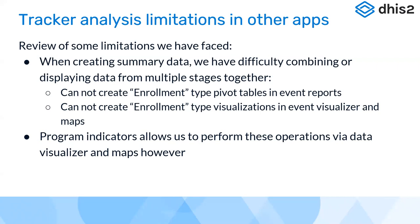Some limitations we faced while using analytic tools such as event report, visualizer, and maps: when creating summary data, we had difficulty combining or displaying data from multiple stages together. We were not able to create enrollment-type pivot tables in event reports — we could create enrollment-type line lists but not enrollment-type pivot reports pulling data from multiple program stages. We also could not create enrollment-type visualizations in event visualizer and maps. This is one gap in existing analytic tools which program indicators can fill.